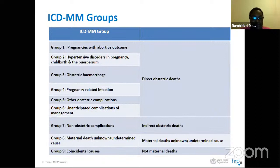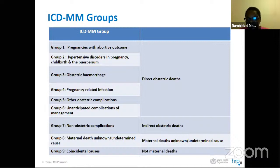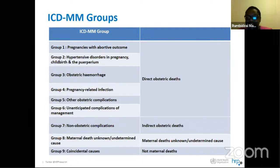These groups are classified such that you can identify the type of death at a glance. Groups 1 through 6 — abortive outcomes, hypertensive disease, obstetric hemorrhage, pregnancy-related infections, other obstetric complications, and unanticipated complications of management — are direct maternal deaths. Group 7, non-obstetric complications, represents indirect obstetric deaths. Group 8, undetermined, cannot be classified into either. Group 9, coincidental causes, are not maternal deaths but pregnancy-related deaths.